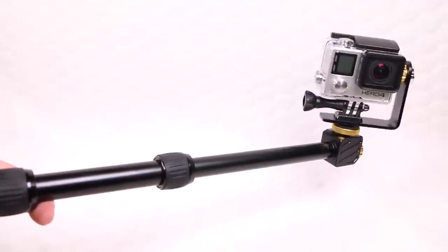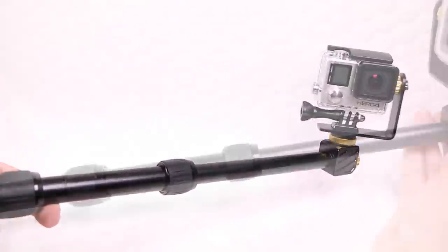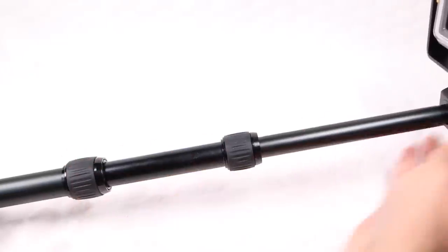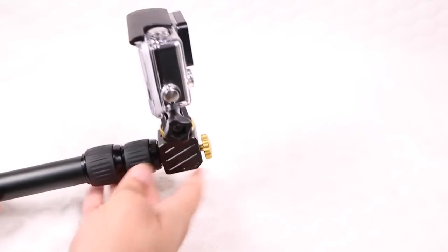Whether in its pan or tilt configuration, extending the pole maintains that super smooth motion regardless of its current set length. It all works impressively well.